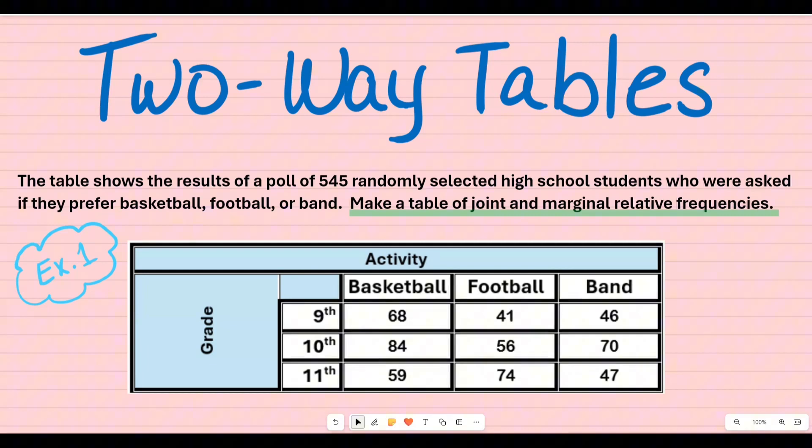Example one: the table shows the results of a poll of 545 randomly selected high school students who were asked if they prefer basketball, football, or band. Make a table of joint and marginal relative frequencies.